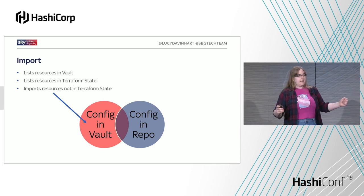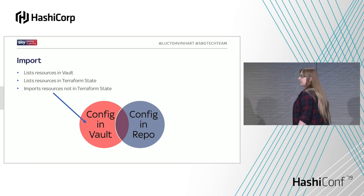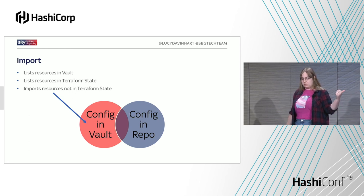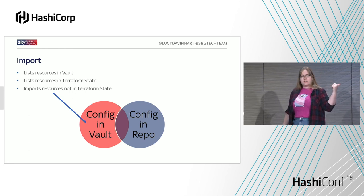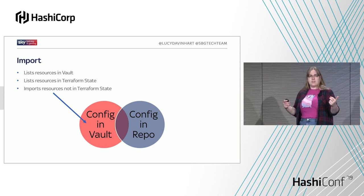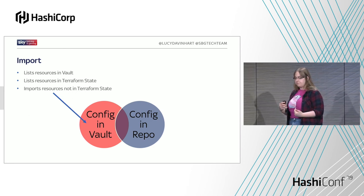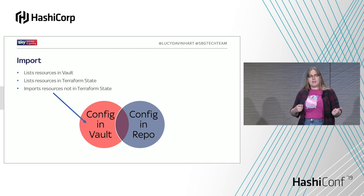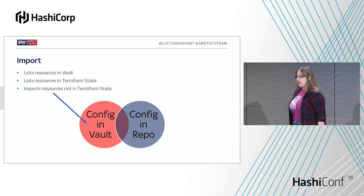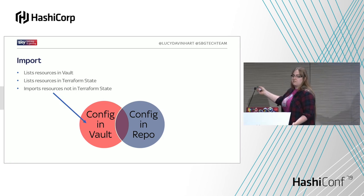Next we have the import phase — this is our fail-secure mechanism, where we make sure there's nothing in Vault that shouldn't be there. For each resource type in this pipeline, we have a script that lists all resources of that type within Vault, lists all resources in the Terraform state, and compares those two things. If there's something in Vault that Terraform doesn't already know about, we import it into the Terraform state. The idea is: if you tell Terraform something exists but haven't written code to say it's supposed to exist, Terraform will want to delete it — which is the whole point of this stage.